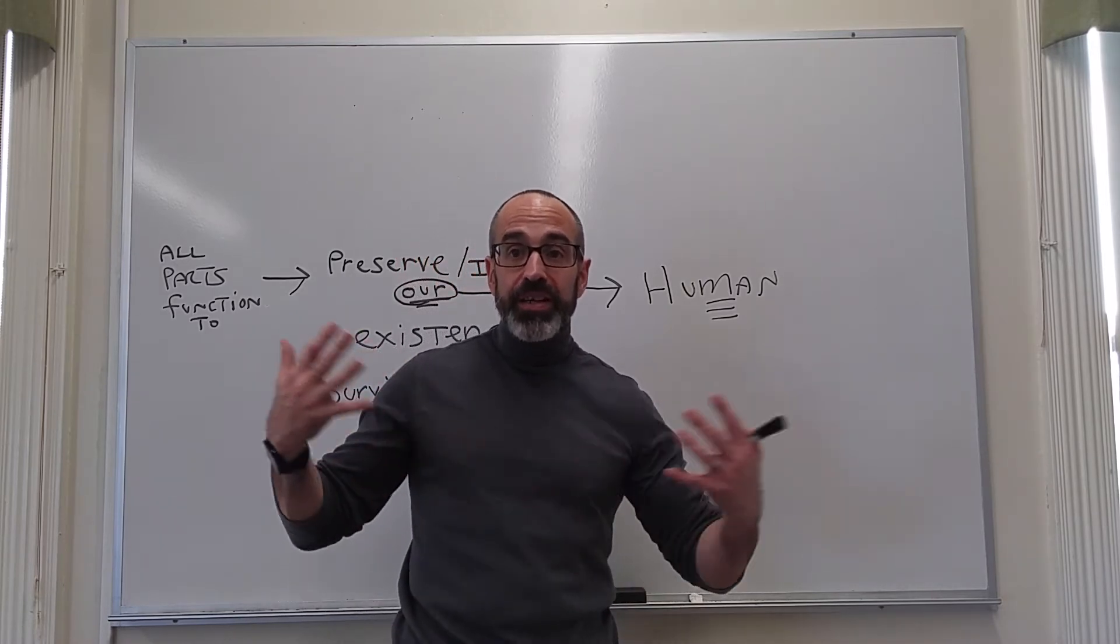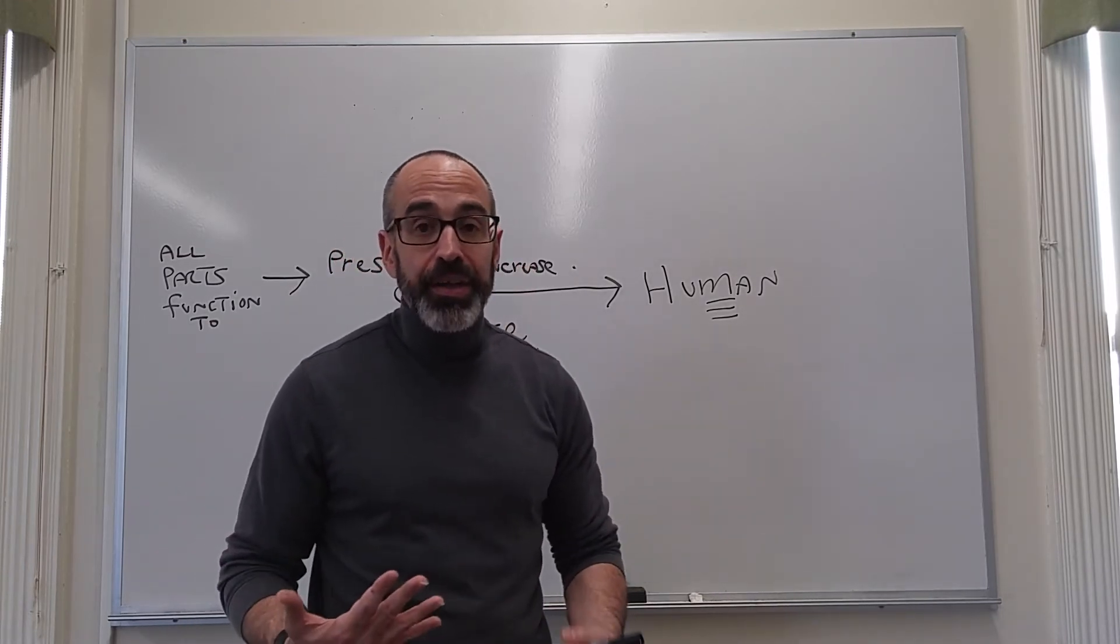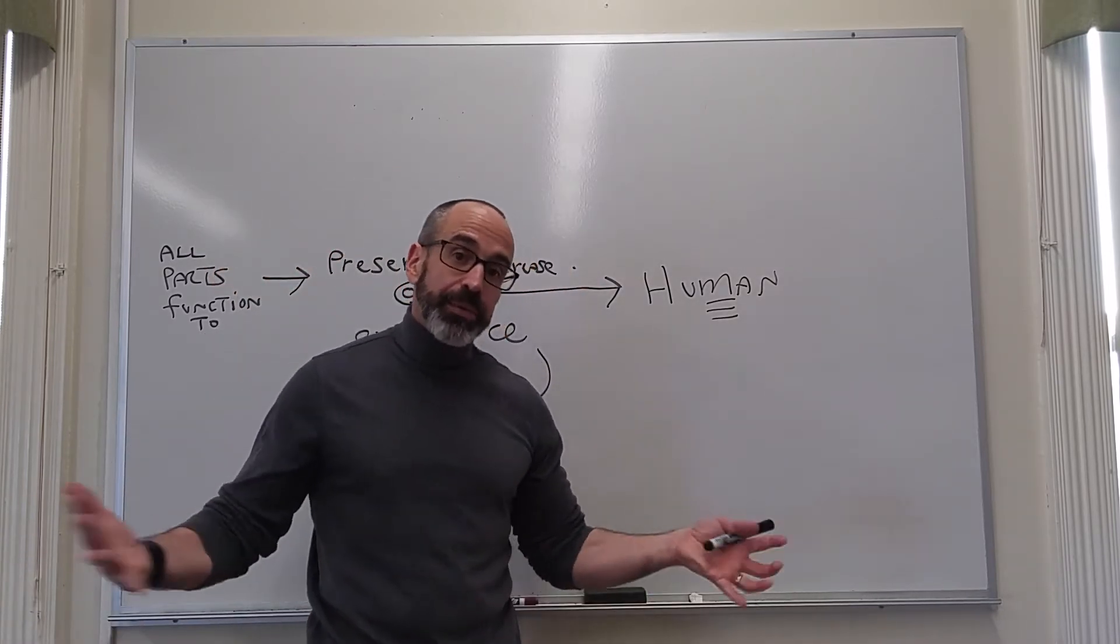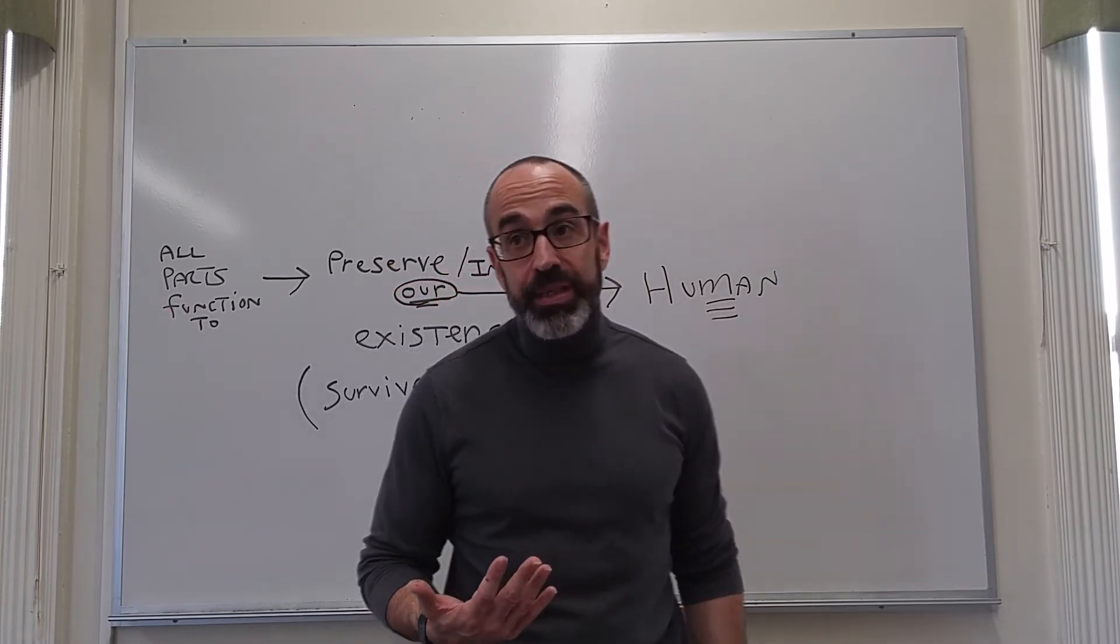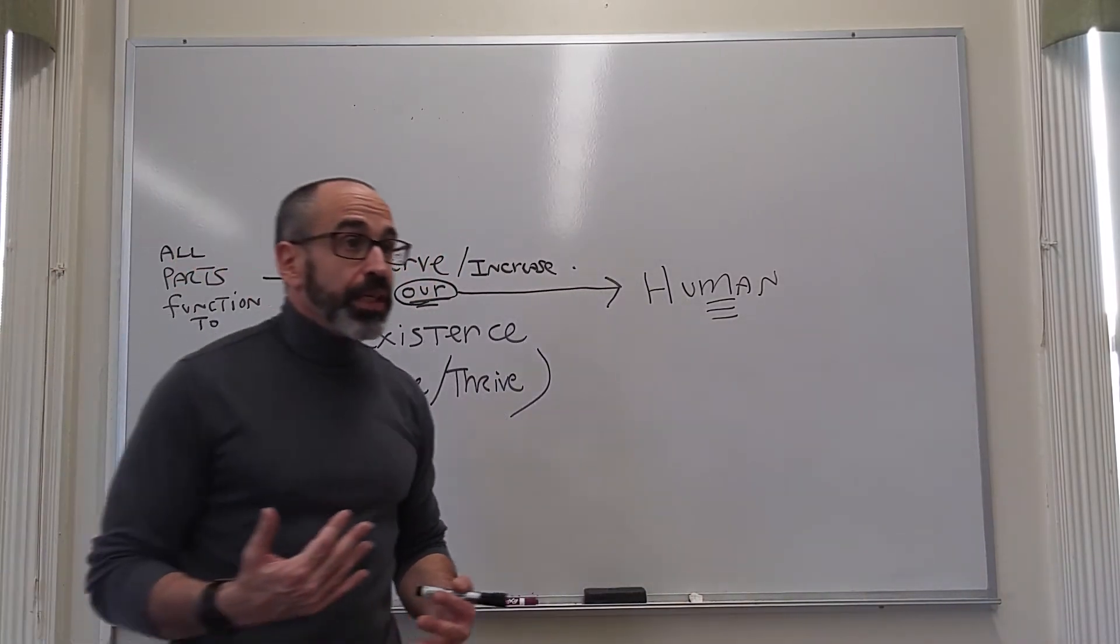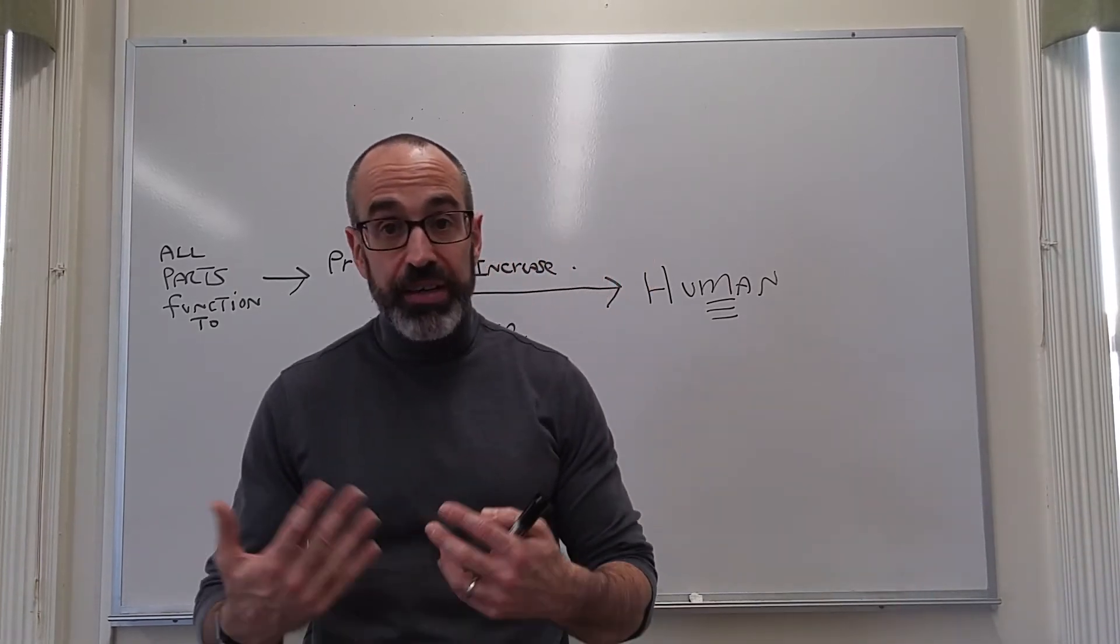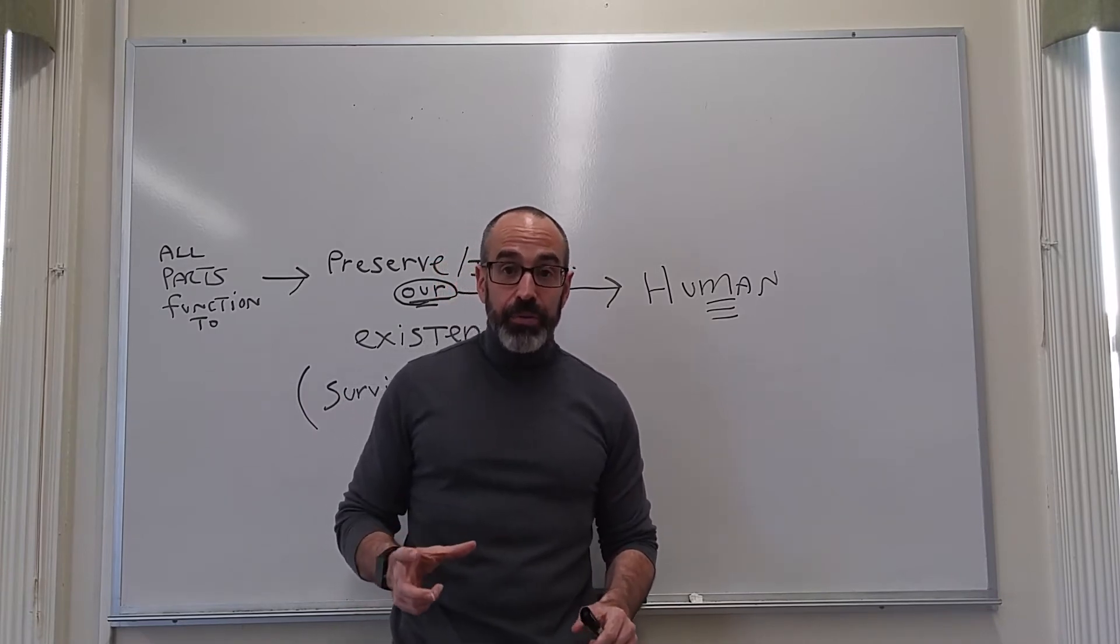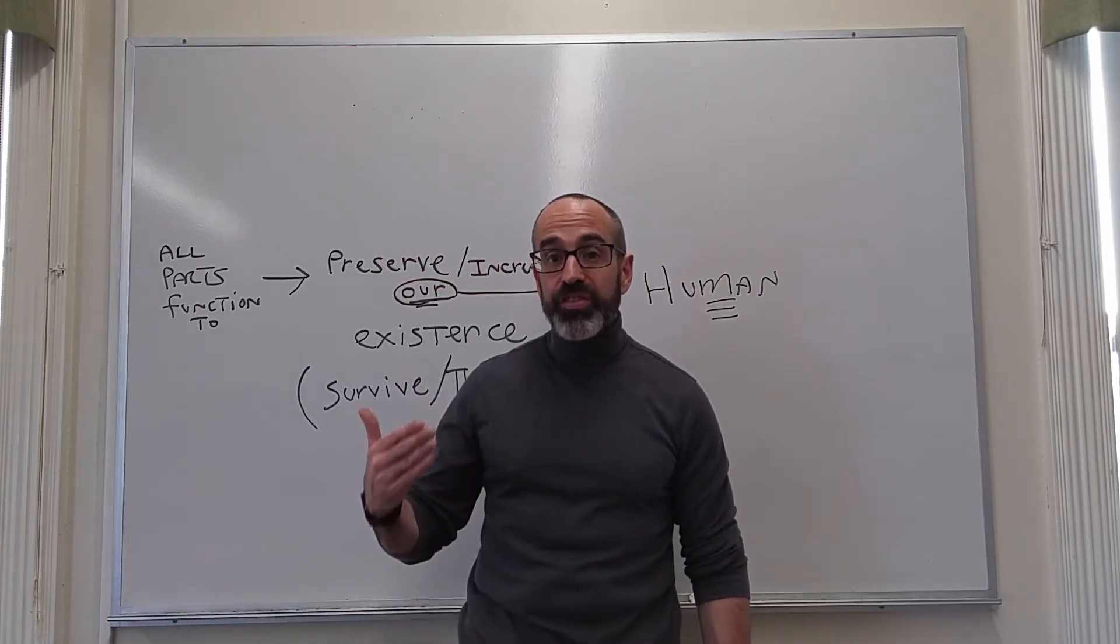So he considers the various things. He considers that human beings are living beings, are alive. But so are dogs, so are bacteria, so are amoebas. So that's not what makes us special. That's not what makes us human. He then considers the fact that humans, unlike bacteria or plants, even though all of these things reproduce and take in nutrition and carry out the basic functions of life, they are not animals.